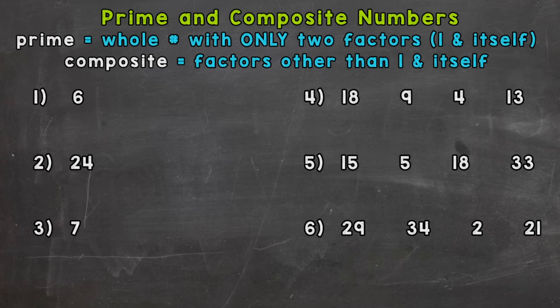In number four, there is going to be one prime number out of the four. In number five, there's one number out of the four. And number six, there are going to be two prime numbers out of the four. So let's go into our definitions here and then go through our examples.